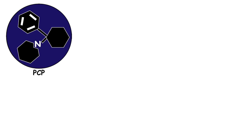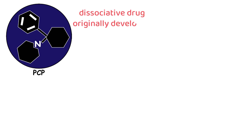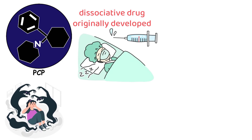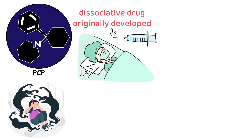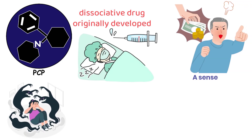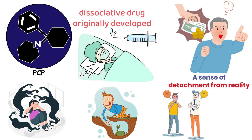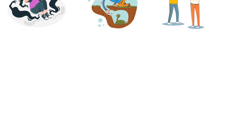PCP, or phencyclidine, is a dissociative drug originally developed as an anesthetic. It can induce hallucinations, delusions, and a sense of detachment from reality, often leading to unpredictable and sometimes violent behavior.